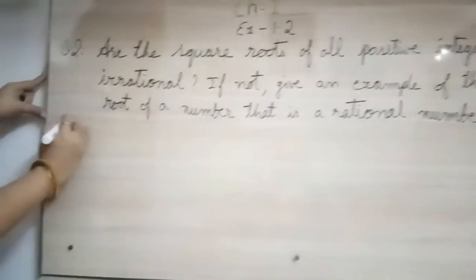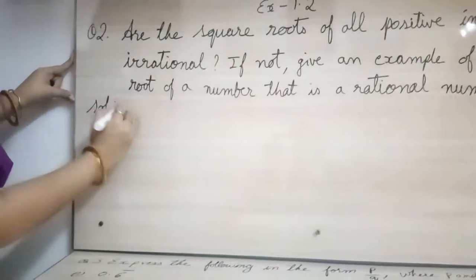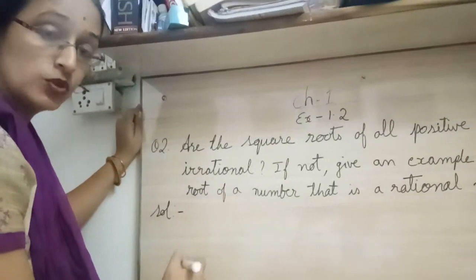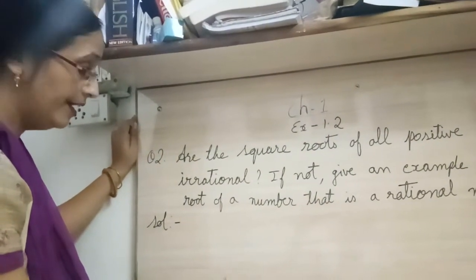Now let me tell you when we talk about square root of a number, only when you have prime numbers, their square root will be irrational.